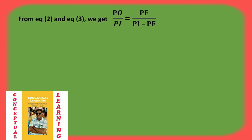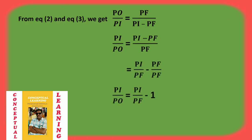From equations 2 and 3, we get PO/PI = PF / (PI − PF). Therefore, PI/PO = (PI − PF) / PF. Dividing through, PI/(PI·PO) = PI/PF − 1.